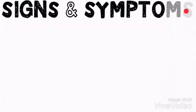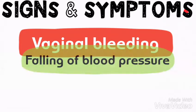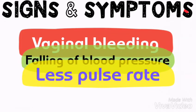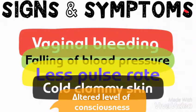Let us now look at some signs and symptoms of PPH. We have vaginal bleeding due to uterine and genital tract rupture of blood vessels. We have falling blood pressure due to the imbalance of electrolytes. We also have less pulsation due to impaired blood circulation. We have cold, clammy skin with low temperature due to disturbance in thermoregulation. We also have altered levels of consciousness due to lower energy and blood supply to the brain.